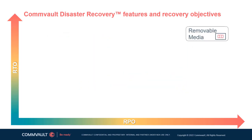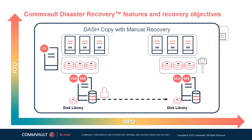The next option is to utilize a dash copy at a remote location and recover required components and workloads manually. This utilizes the secondary copy of data on disk and remote media agents and therefore does not require any additional hardware up until the point of restore. This might be a good option for cloud workloads or rented DR premises.